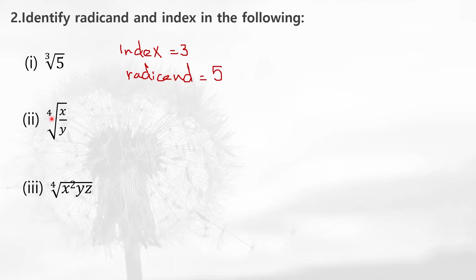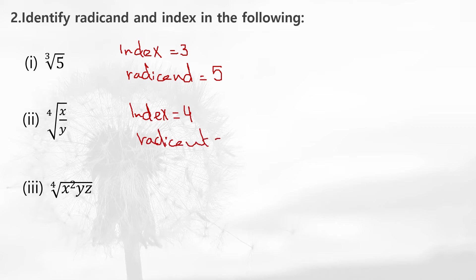Now look at the second one. Here x by y is a fraction inside the root. Whatever is inside the radical symbol is the radicand. This means x by y is your radicand and 4 is the index. So index is equal to 4 and radicand is x by y.